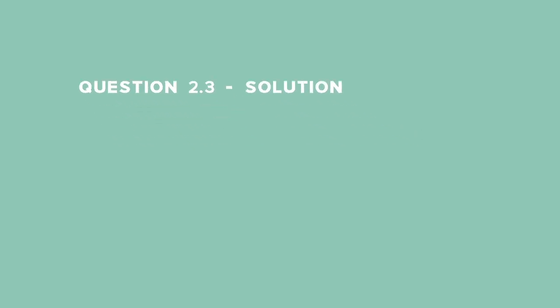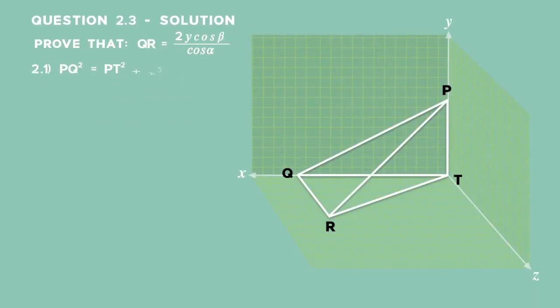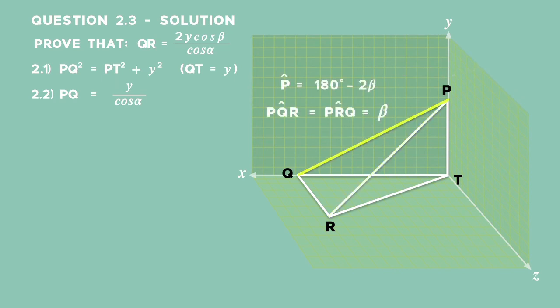For 2.3, you will need the ratios and conclusions from 2.1 and 2.2. In triangle PQR, we have found that side PQ is equal to PR. Therefore, triangle PQR is an isosceles triangle and angle PQR is equal to angle PRQ. Both equal beta. Using the sum of angles of triangles, we get that angle P is equal to 180 degrees minus 2 beta. Since we have PQ and two angles in triangle PQR, we can use the sine rule to work out an expression for side QR.